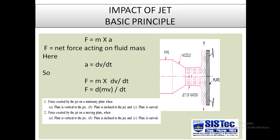The second category is when the plate is also moving with some velocity — force exerted by the jet on a moving plate. This also has three cases: plate is vertical, plate is inclined, and plate is curved. Broadly, there are two types — stationary plate and moving plate — giving six combinations in total.